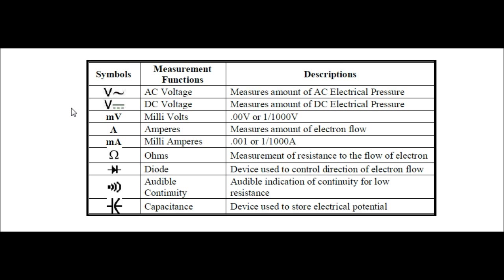Number three: mV represents millivolts — 0.001 V, or one divided by a thousand volts. Number four: capital A represents amperes or amps, measuring the amount of electron flow. Number five: mA represents milliamperes — 0.001, or one divided by a thousand amps. Number six: the horseshoe or omega symbol represents ohms — the measurement of resistance to the flow of electrons.